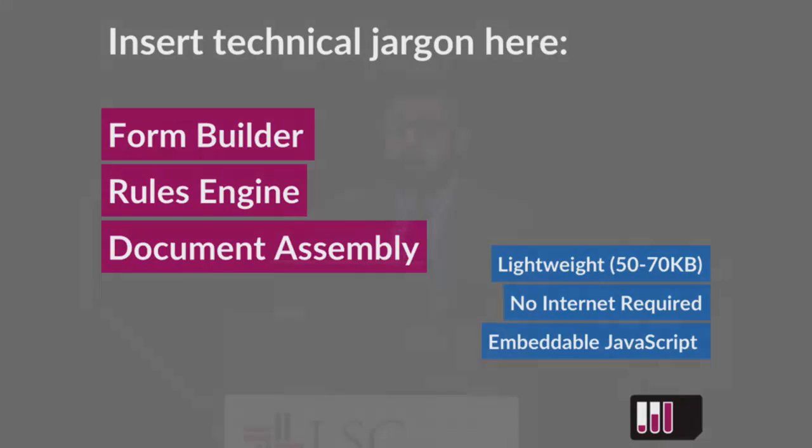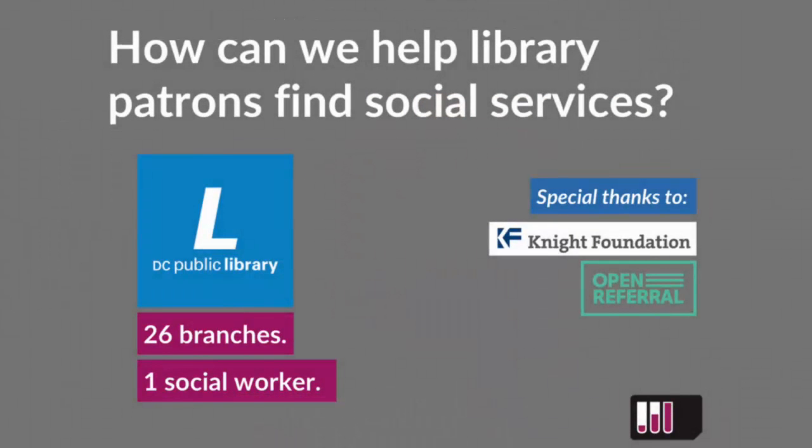First I want to talk a little bit about how this project came to be. DC Public Library received a prototype fund grant from the Knight Foundation — about $35,000 to build something over six months. They came to us looking to build a tool about how they can help library patrons find social services.